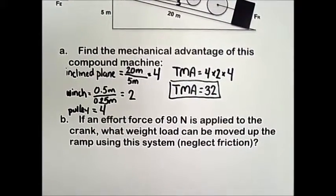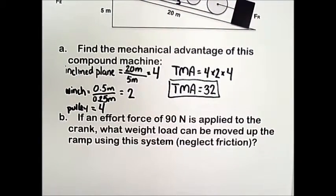Part B asks us, if an effort force of 90 newtons is applied to the crank, what weight load can be moved up the ramp using this system? And again, we're going to neglect friction on this inclined plane.